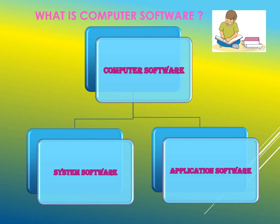System software is an operating system which is used to operate our computer system — to start, get ready, and activate all the peripheral devices to do our work on the computer. Application software is used to do other tasks or work on the computer, like documentation, presentation, drawing, and calculation.